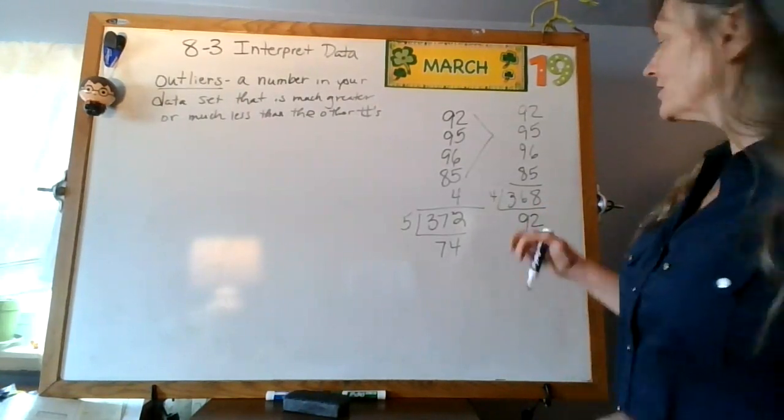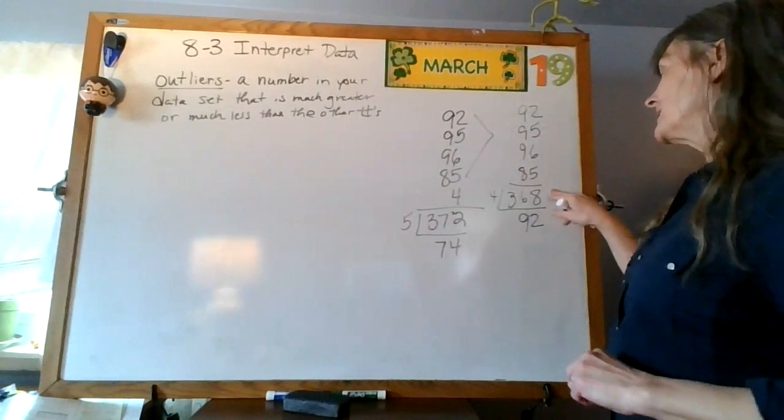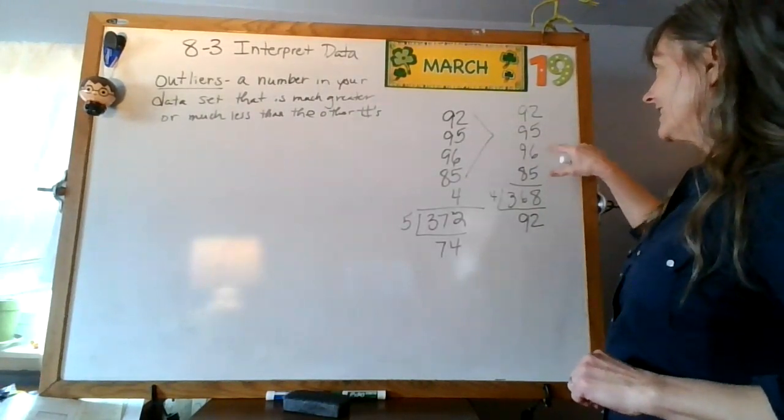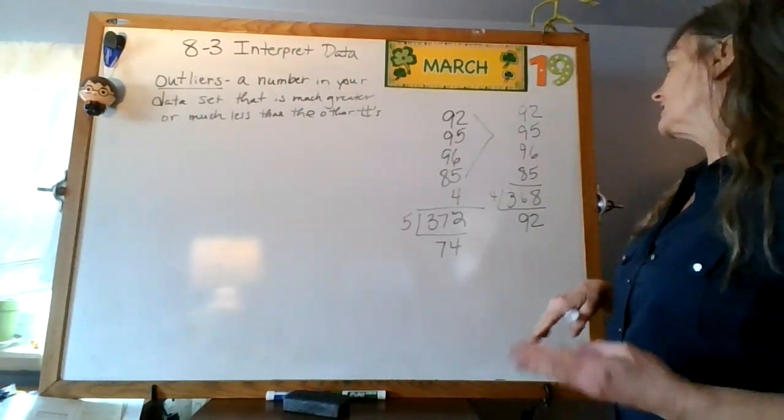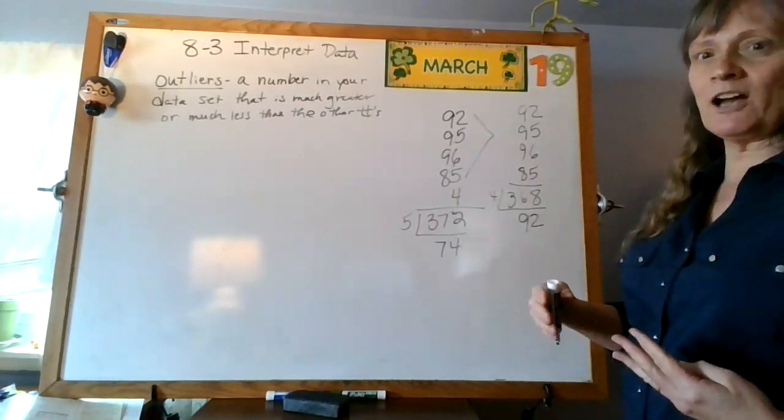Okay, so my average here is 92. That seems like it matches the data set, right? 96, 95, 92, 85. That seems like it matches, and now I'm like, okay, that falls within a good range.